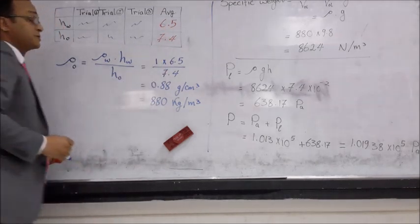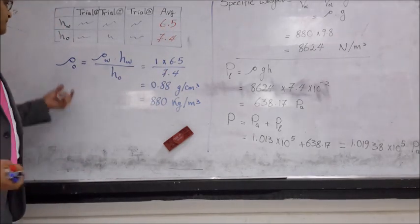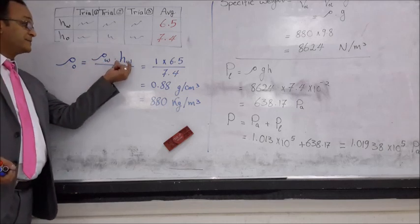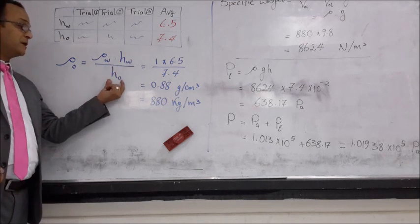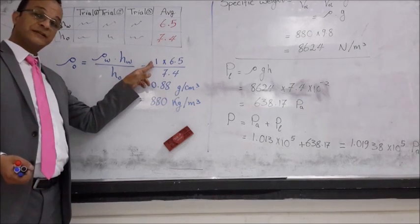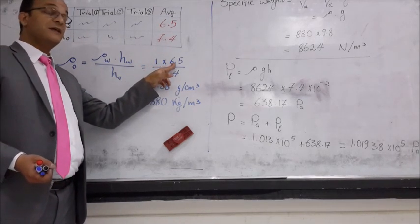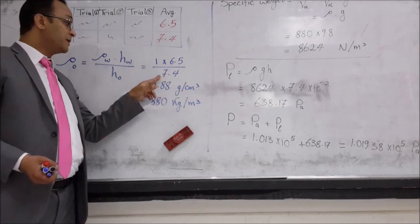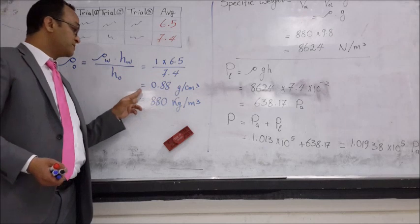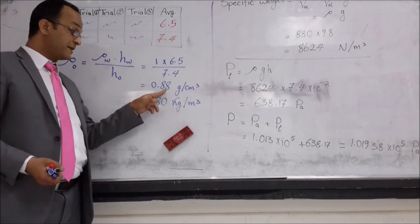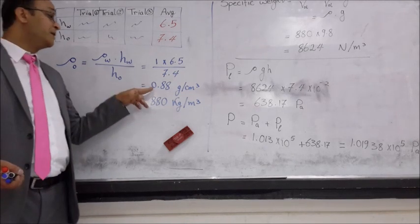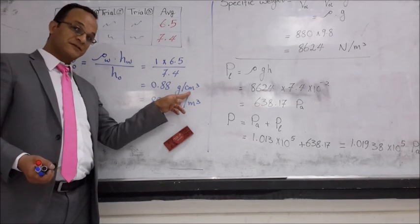We will use the average of both heights to find, as you remember, ρ_oil equals ρ_water times h_water over h_oil. We will substitute 1 for the density of water times 6.5 the height of water over 7.4 the height of oil. Make your calculations. So the density of oil will be 0.88 gram per cubic centimeter.